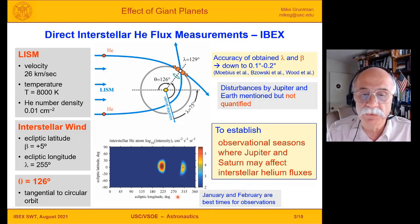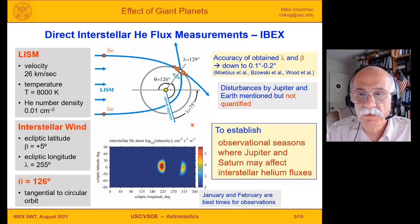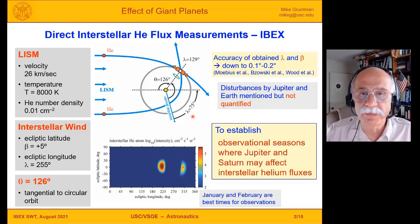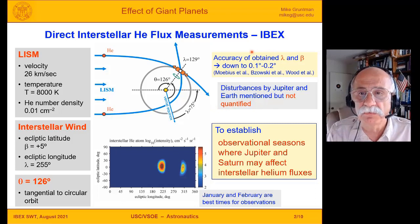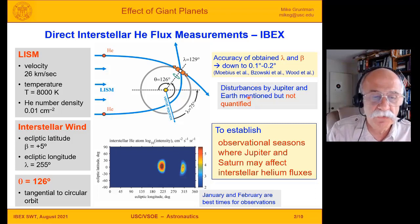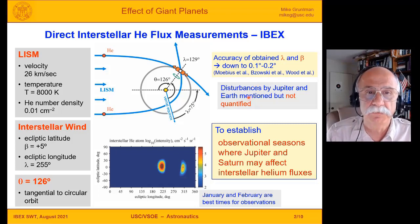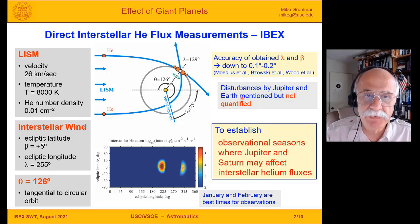The figure at the bottom shows the map of the sky in intensities of interstellar helium atoms. Accuracy of reconstructing the interstellar wind vector in such experiments started on Ulysses a couple of decades ago and now on IBEX. The accuracy of reconstruction of the interstellar wind vector is close to a fraction of one-tenth of one degree. With such accuracy, we need to look at other possible disturbances that may affect penetration of the interstellar helium atoms into the solar system.